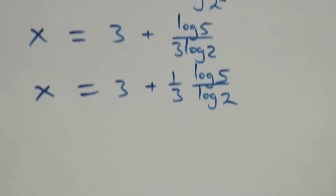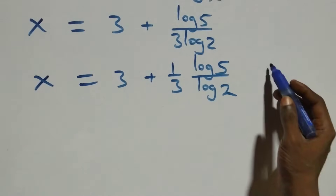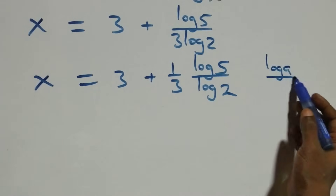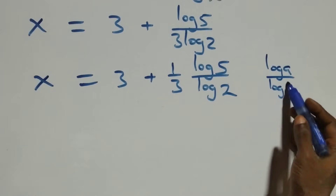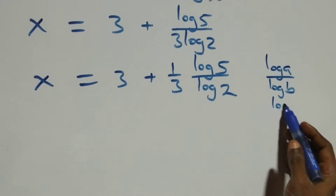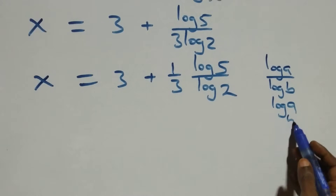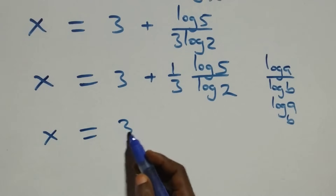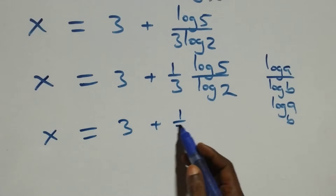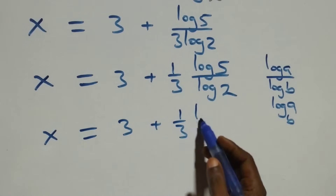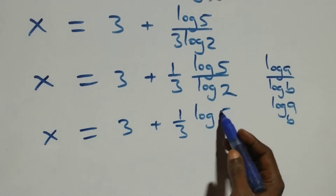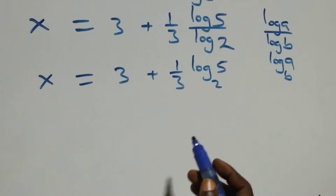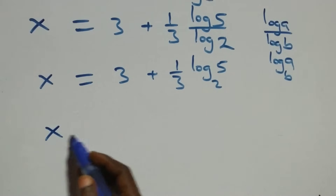We apply the change of base formula: log a over log b equals log a base b. So log 5 over log 2 becomes log 5 base 2, giving x equals 3 plus one third log 5 base 2.